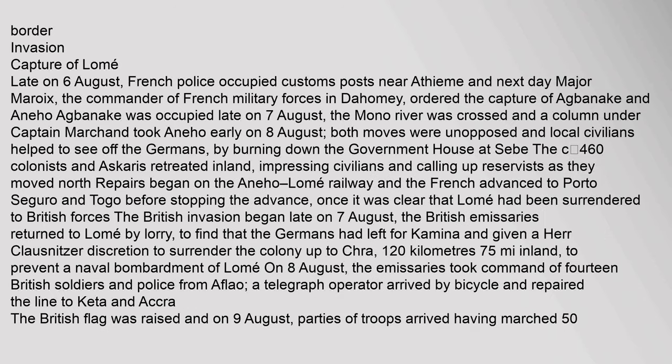Late on 6 August, French police occupied customs posts near Atheme, and the next day Major Marat, the commander of French military forces in Dahomey, ordered the capture of Agbanake. Anejo-Agbanake was occupied late on 7 August, the Mano River was crossed, and a column under Captain Marchand took Anejo early on 8 August. Both moves were unopposed and local civilians helped to see off the Germans by burning down the government house at Ceba. The approximately 460 colonists and Ascaris retreated inland, impressing civilians and calling up reservists as they moved north.